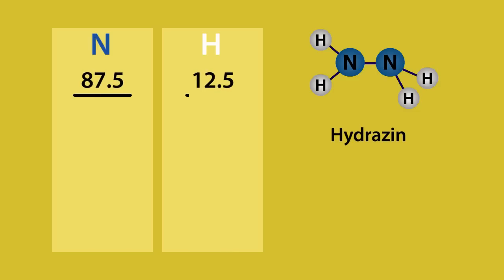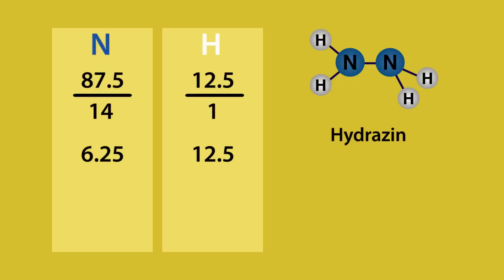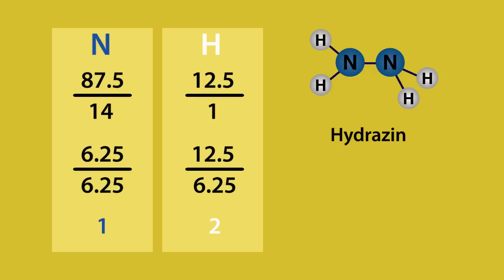We then divide these percentages by the relative atomic mass of each element — so that's 14 for nitrogen and 1 for hydrogen. Doing this calculation gives us 6.25 for nitrogen and 12.5 for hydrogen. We then divide these numbers by the smallest of the two, which is 6.25, and this gives us the ratio of 1 to 2. Since 1 and 2 is the smallest possible ratio, the empirical formula is NH2.